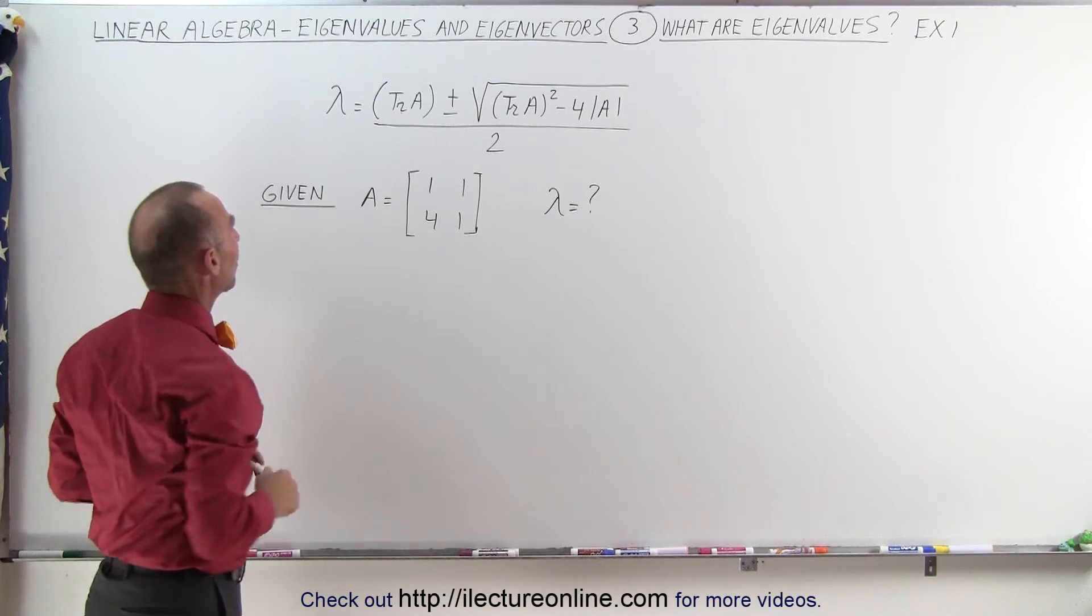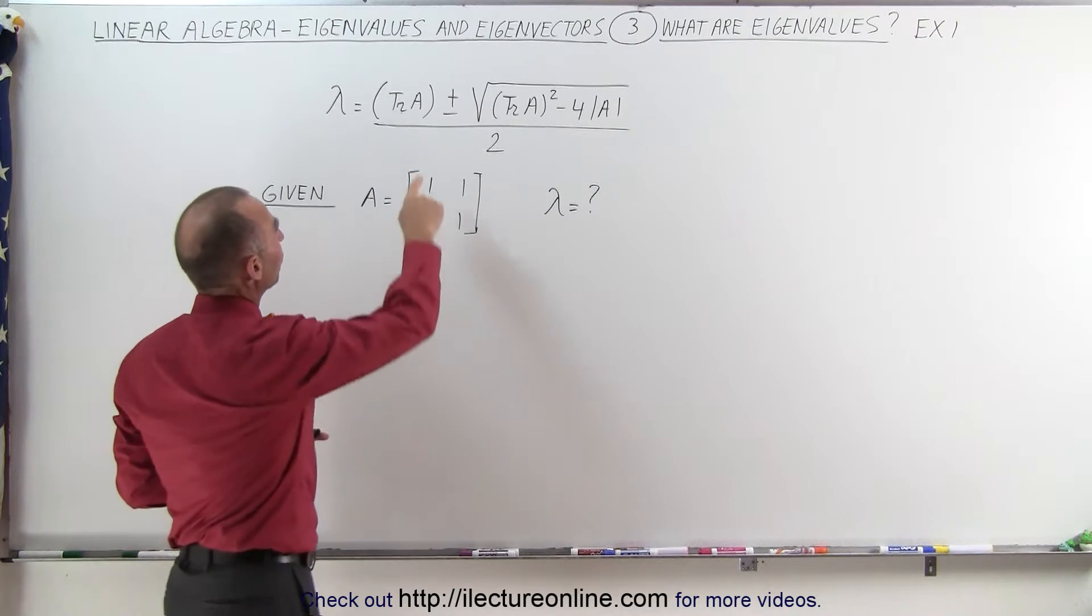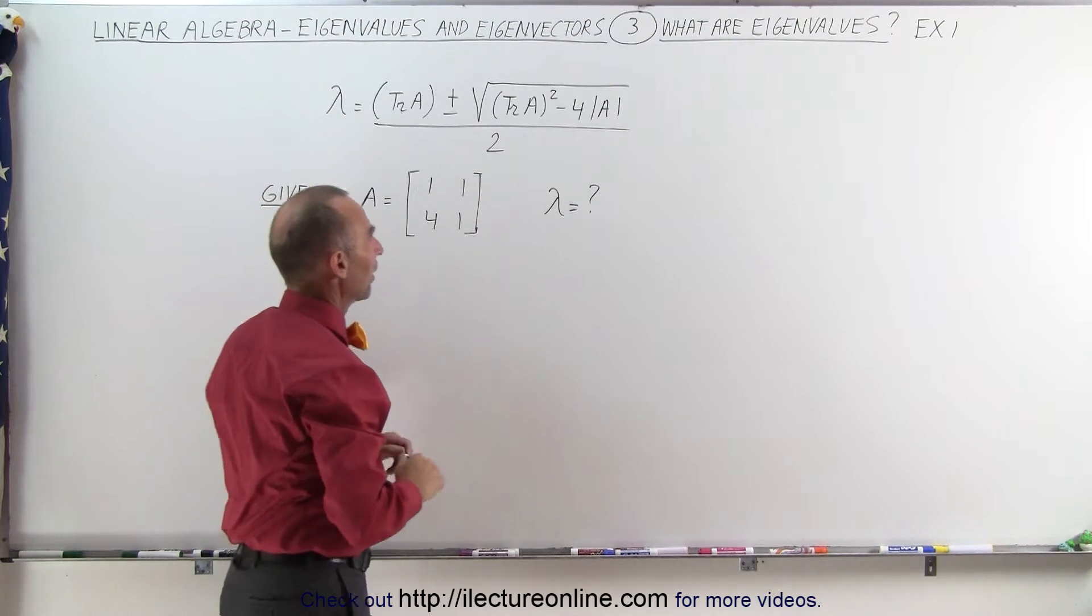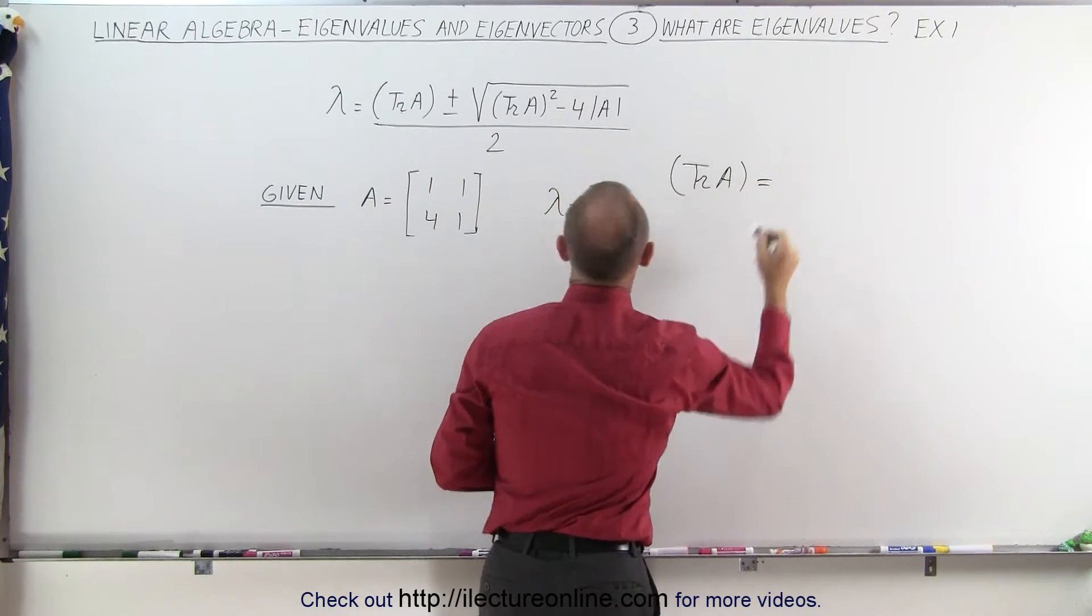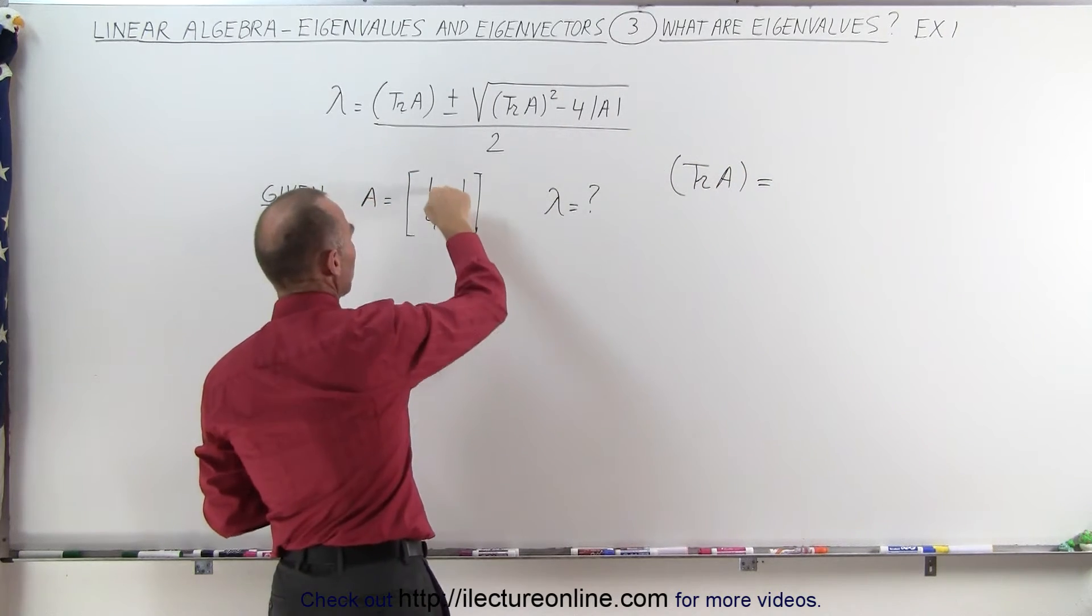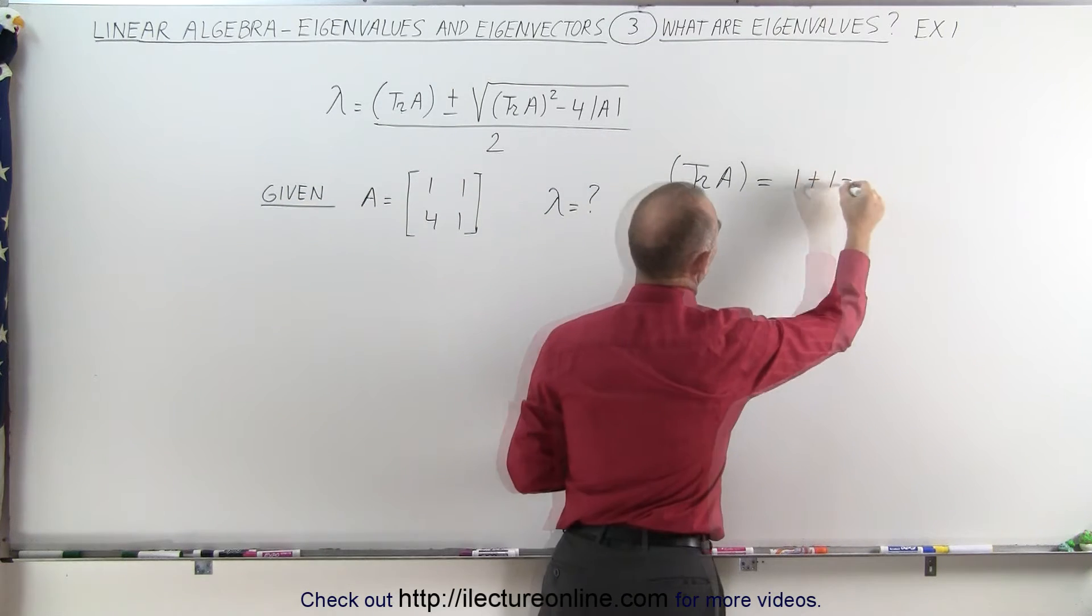Let's first find the trace of A and the determinant of A. The trace of A is equal to the sum of the diagonal elements. That would be 1 plus 1, which is 2.